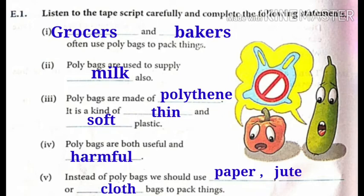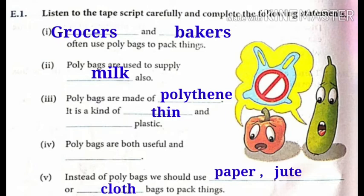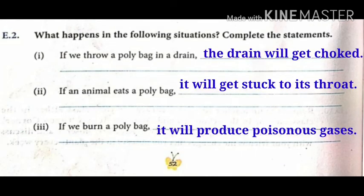Number four: poly bags are both useful and dash — harmful. Number five: instead of poly bags, we should use dash or dash bags to pack things — paper, jute, or cloth bags to pack things. Now next exercise, E2 of page number 52: what happens in the following situations — complete the statements. First: if we throw a poly bag in our drain, then